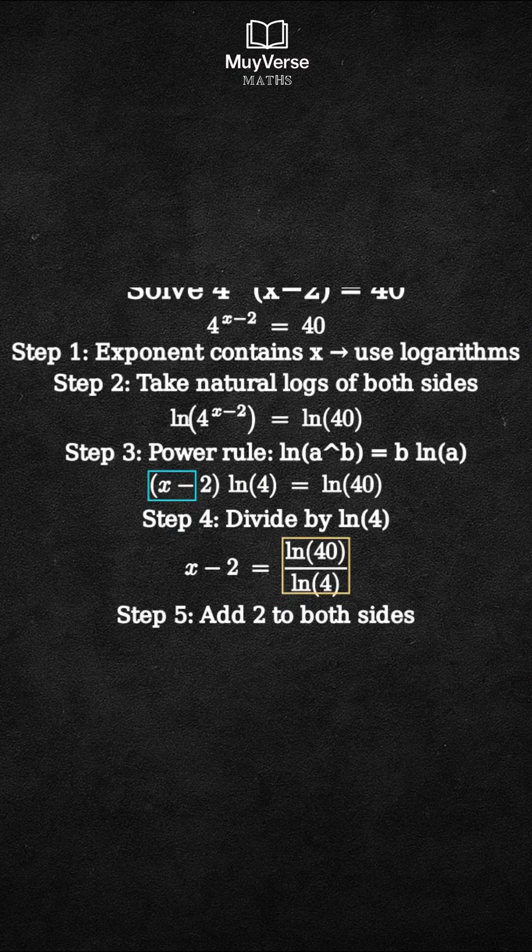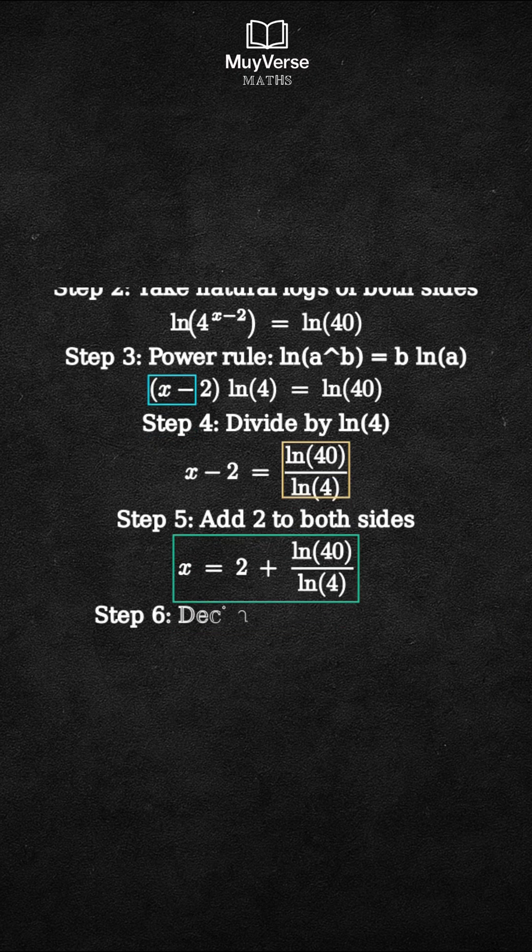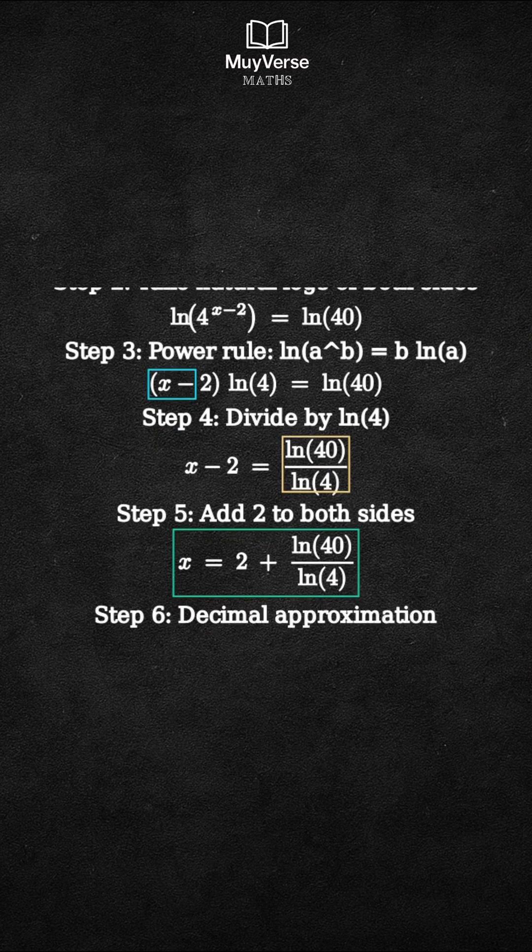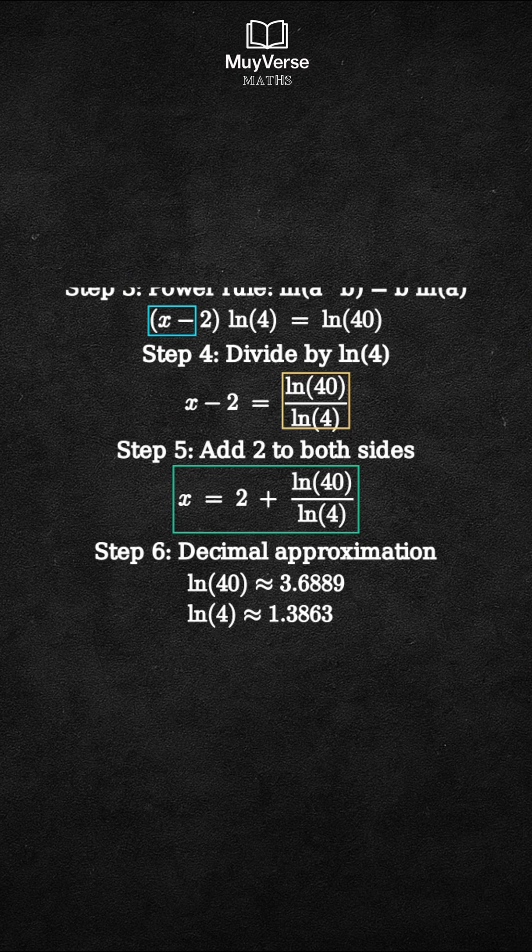Step 6: Compute a decimal approximation. Natural log of 40 is approximately 3.6889, and natural log of 4 is approximately 1.3863. Their ratio is approximately 2.6610.